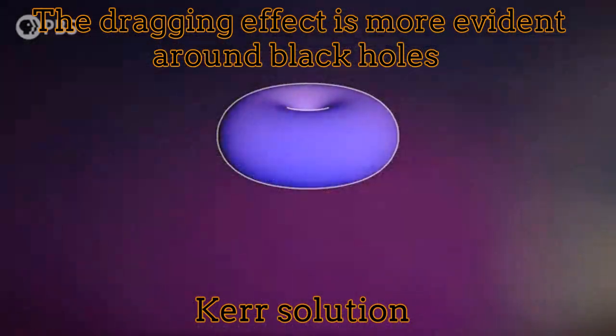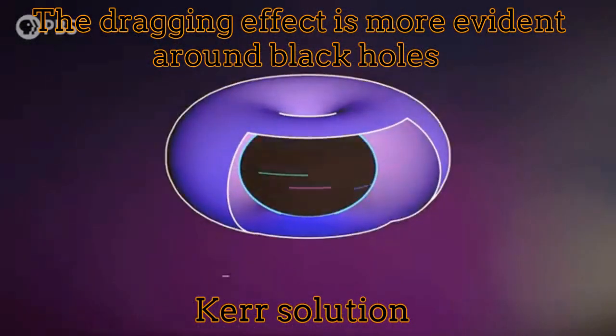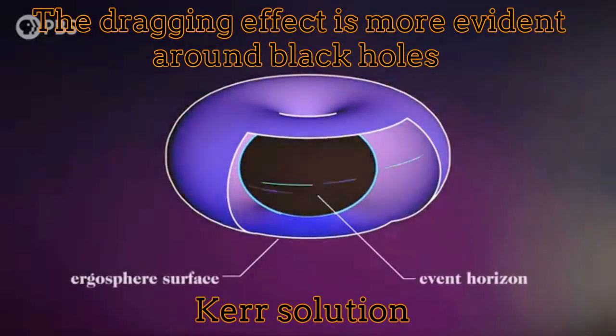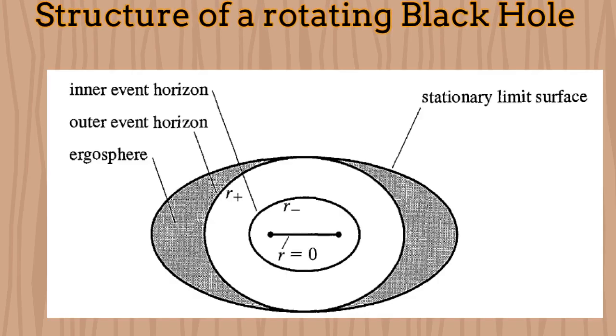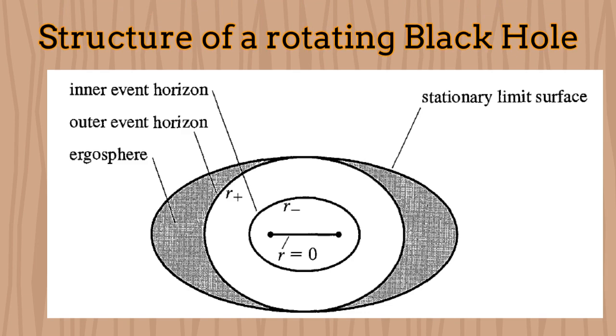In fact, when the black holes rotate, they develop the so-called Kerr solution. Inside the Kerr solution, not only a beam horizon can be identified, but in addition an ergo-sphere surrounding the same horizon.